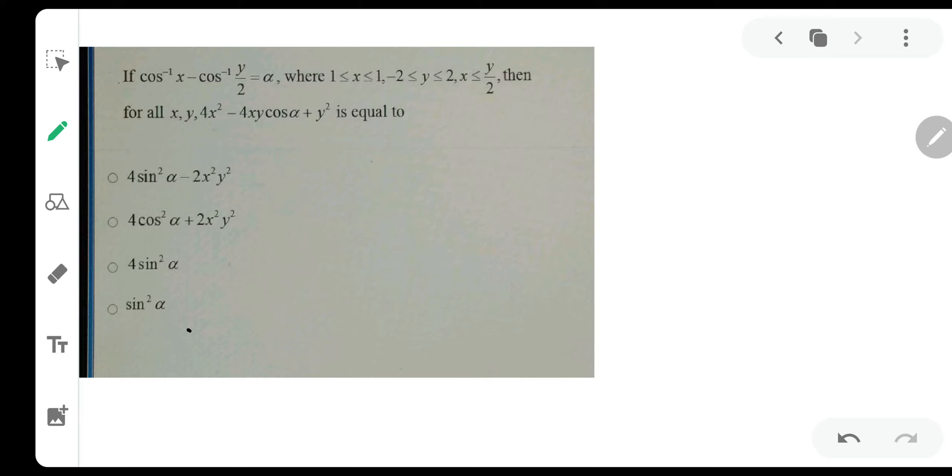Today one of our students has asked us this very interesting question. The question is cos inverse x minus cos inverse y by 2 is equal to alpha. And then there is given domain x lies between minus 1 to 1. There is a typo. Then y lies between minus 2 to 2 and x is less than or equal to y by 2.